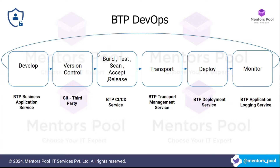The next service is the CI/CD service on BTP. After version control is done, your code is in one place as the final version ready to be deployed. Before deploying, you do some initial checks: code building, testing, malware scanning, and acceptance testing. Once everything passes, you release the code, which can then be deployed to one of the environments.